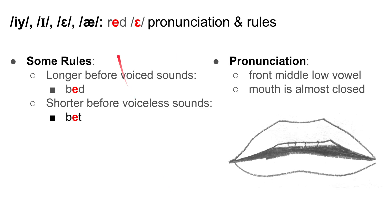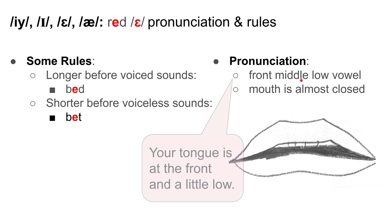Let's move on and look at the other two front vowels — these are low front vowels. E as in 'red.' Some pronunciation rules: E tends to be longer before voiced sounds, such as 'bed,' and shorter before voiceless sounds, such as 'bet.' It's a front middle-low vowel, so your tongue is at the front and a little low. The mouth is almost closed — bed, bet.